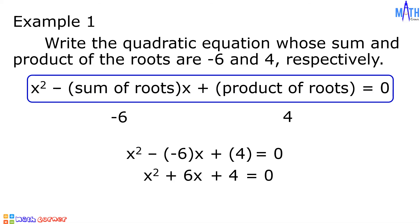So the quadratic equation whose sum and product of the roots are negative 6 and 4 is x squared plus 6x plus 4 equals 0.